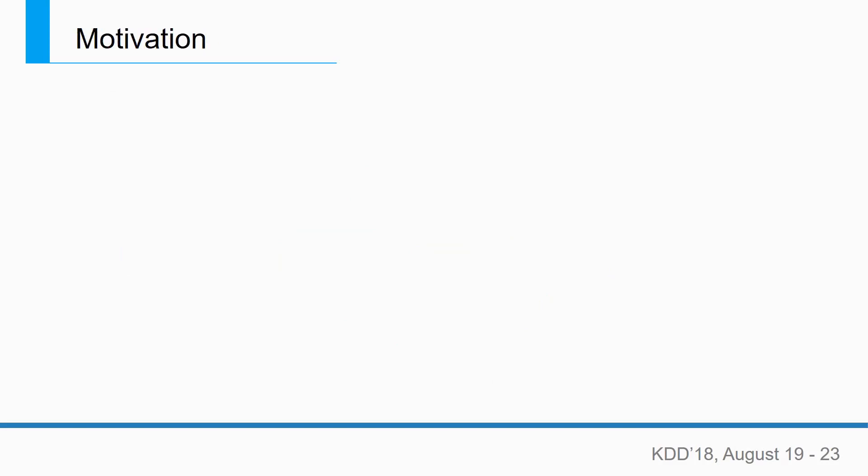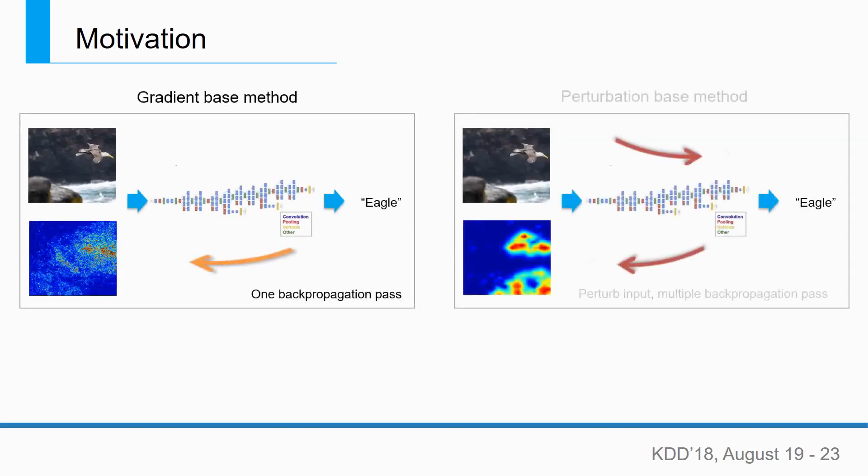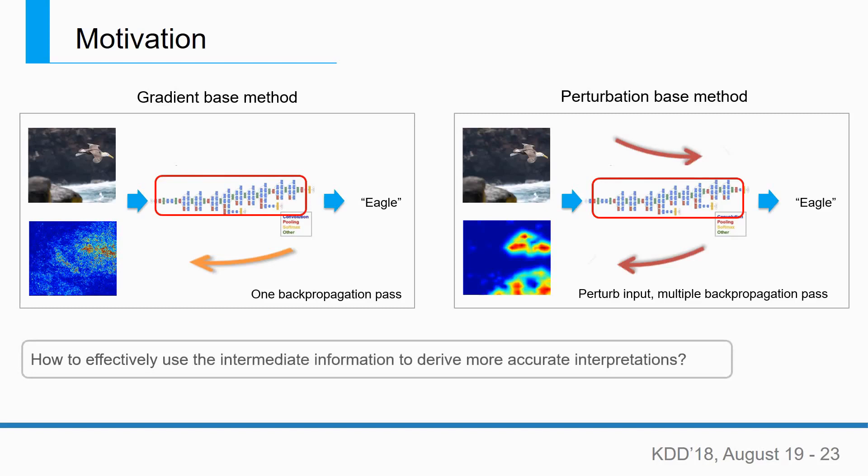Existing interpretation methods can be classified into two categories: gradient-based methods and perturbation-based methods. However, if we look at these methods, they simply ignore the informative intermediate layers of deep neural networks. Therefore, we ask this question: How to effectively use the intermediate information to derive more accurate interpretations?